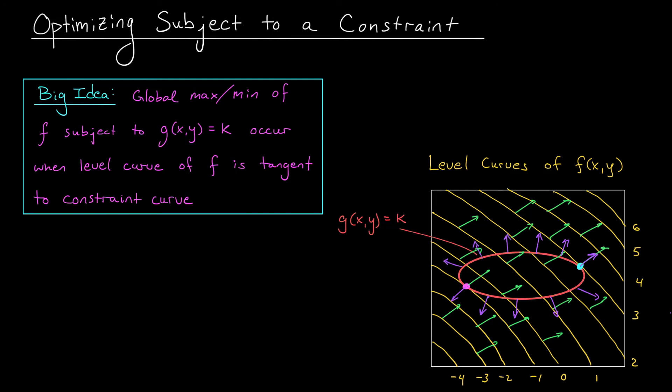All right, I want you to take one more look at our global max and global min. Do you notice anything interesting here regarding the gradient vectors? Looks to me like at both points, the gradient for f and the gradient for g are parallel. They're either pointing in exactly the same direction or in complete opposite directions. This, folks, is the key. At these points, where the level curves of f are just tangent to the constraint curve, the gradient of f is going to be a scalar multiple of the gradient of g.